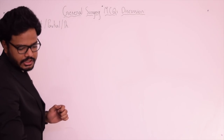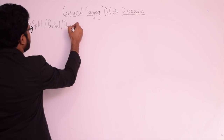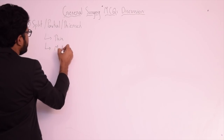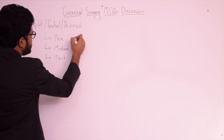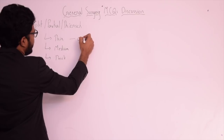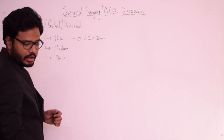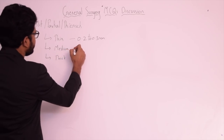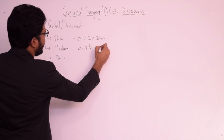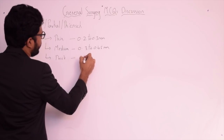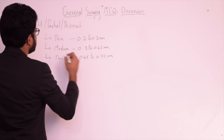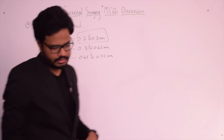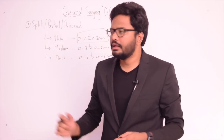The Thiersch graft (spelled T-H-I-E-R-S-C-H) is subcategorized into thin, medium, and thick. The thickness of the thin subcategory is 0.2–0.3 mm, or 0.008–0.012 inches. Medium thickness is 0.3–0.45 mm, and thick is 0.45–0.75 mm. So the answer is 0.2–0.3 mm. Also remember, partial thickness is also called split or Thiersch graft.